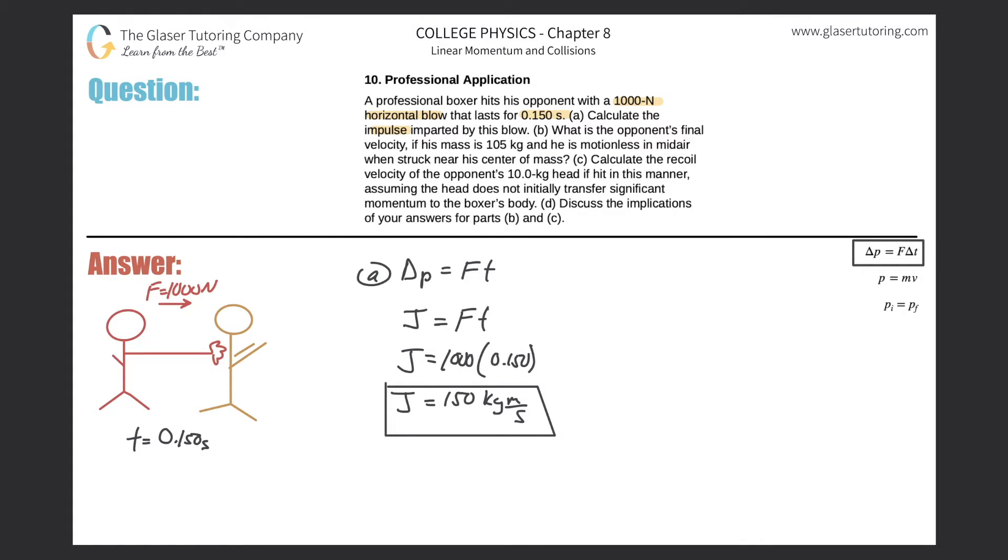Let's take a look at letter B. It says, what is the opponent's final velocity if his mass is 105 kilograms and he is motionless in midair when struck near the center of his mass? In thinking about this problem, remember that the impulse we found is the same thing as the change in momentum.